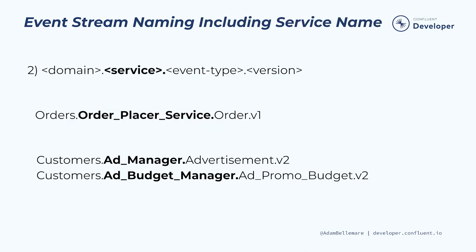You could also choose to include the service name in the event stream naming convention. Including the service name can reduce the ambiguity about where an event originates, especially when coupled with a domain. However, one reason to be careful is that the service that produces the event may change over time. Consider an event stream produced by code inside of a monolithic service — one day that code is refactored into its own microservice with a new name and ownership of the stream is transferred. The service name in the event stream title may no longer reflect the actual ownership. Names are important with Kafka event streams since they are immutable and cannot be renamed. Using service names tends to make the most sense when a stream is used internally to a domain, such as in the case of delta events for event sourcing, where the producer, stream, and consumer are already tightly coupled.